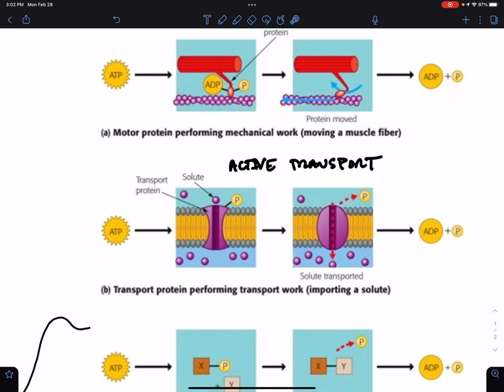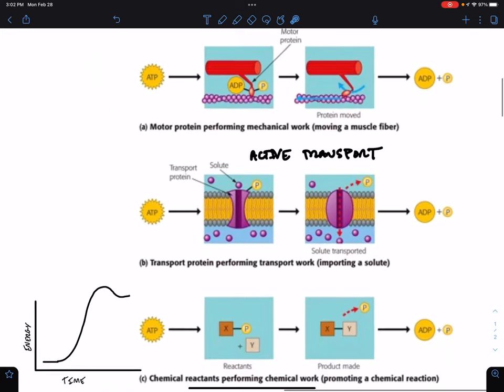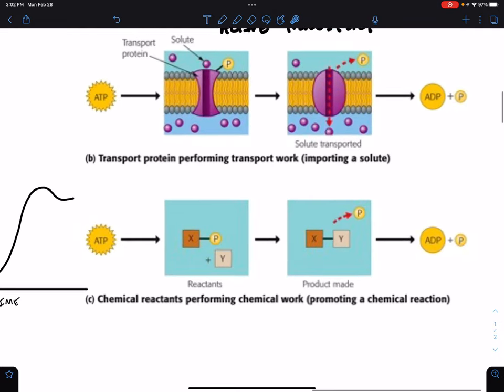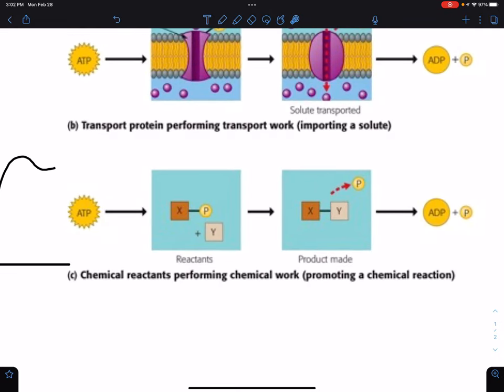When you're moving a molecule against its concentration gradient, often the energy for that is provided by ATP. ATP comes and drops off a phosphate, and then when the phosphate is cleaved off of the protein, the solute particle is pushed through the pump. So once again, we spend some ATP and we get out ADP and phosphate. And then the last example that we're going to talk about today about how we spend ATP is when we have an endothermic reaction.